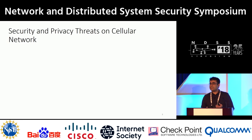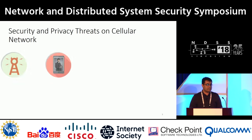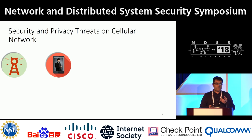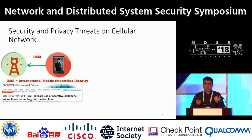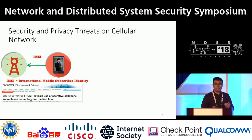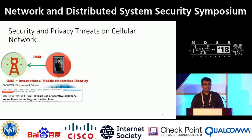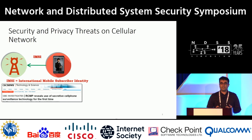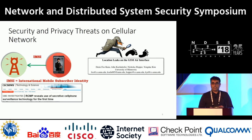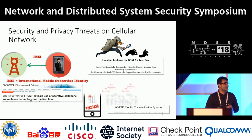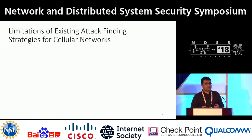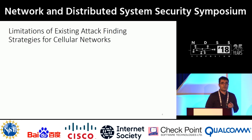There is already a substantial amount of work that addresses threats on cellular networks. One such threat is IMSI catching attacks, where the adversary forces the victim mobile device to expose its unique identity, which we call IMSI. Once the IMSI is exposed, the adversary can track that mobile subscriber. Other researchers have shown that even if the IMSI gets replaced by a temporary identity, the location can still be tracked. Some researchers have also come up with denial-of-service attacks. Most of this work used clever intuitions drawn from specification ambiguity or from operational network mistakes.